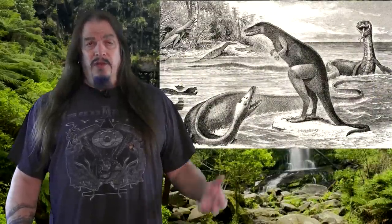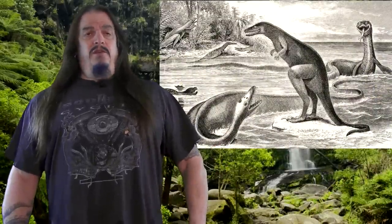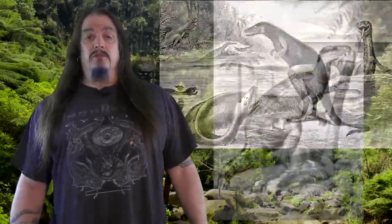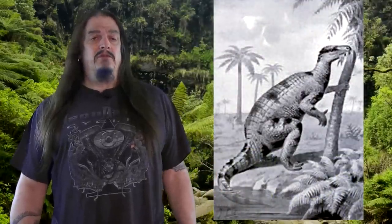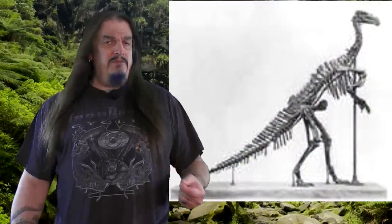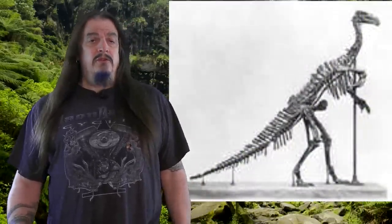As more fossils were found, the image changed dramatically. Both animals were depicted as bipedal, standing fully upright like lizards sometimes do, or resting on their tails like kangaroos. But their tails don't actually bend that way. So now we understand them as walking in a more bird-like posture with their tails held aloft for balance.